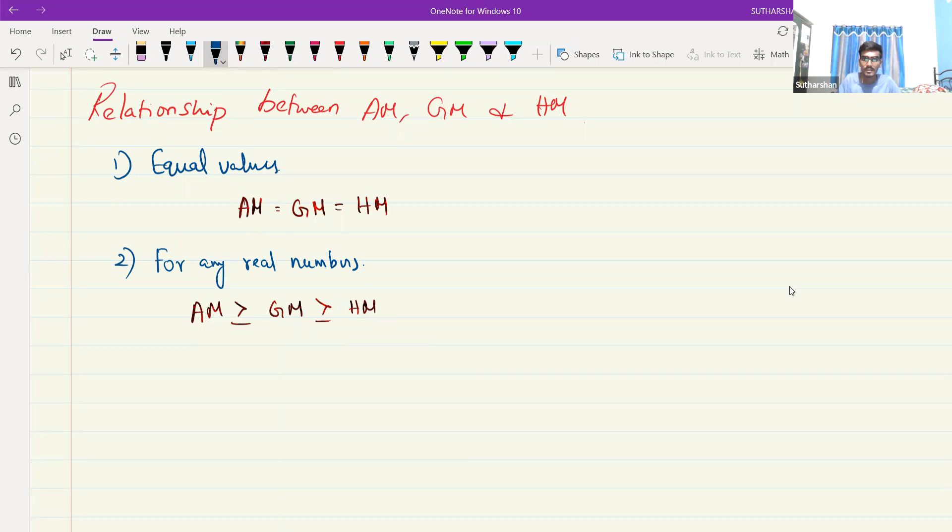Next, for distinct value, for which value, for distinct value or unequal value, unequal numbers is given to you. Suppose it is given to you, AM is always greater than GM, GM is always greater than HM.